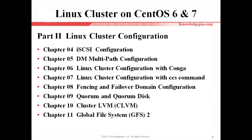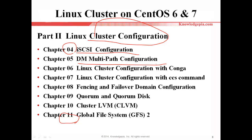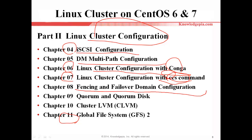Part two will focus on cluster configuration from chapter four to chapter eleven. Chapter four, iSCSI configuration. Chapter five, DM Multipath configuration. Chapters six and seven will focus on cluster configuration with Conga — Conga is a GUI program — and CCS, which is a command line interface. Chapter eight covers fencing and failure domain configuration from Conga and CCS. Chapter nine covers quorum and quorum disk as well. Chapter ten, cluster LVM. Chapter eleven, Global File System 2.